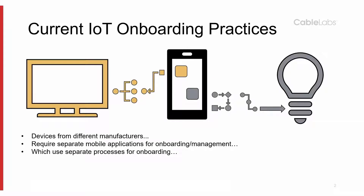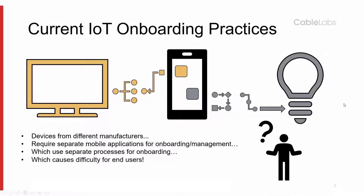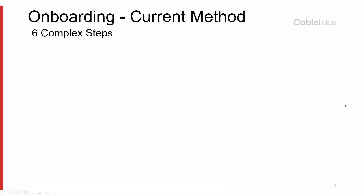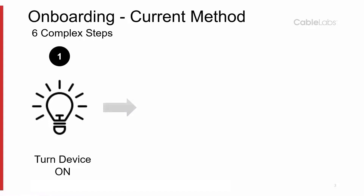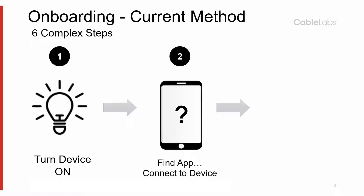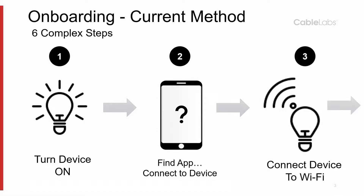Generally, this process of device onboarding takes the form of six complex steps. These steps are as follows: the device is turned on; an app must be installed and opened; this app is used to connect a device to the Wi-Fi network by providing a Wi-Fi password to the device over Bluetooth, for example.